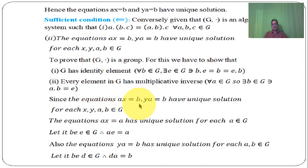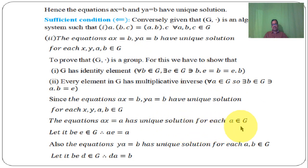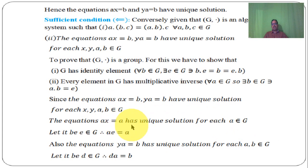Since the equations AX equal to B and YA equal to B have a unique solution for each X, Y, A, B belongs to G, consider the equation AX equal to A — here B is replaced by A. Since A, A belongs to G, for each A belongs to G, the equation AX equal to A has a unique solution. Let that solution be E belongs to G. Therefore A dot E equal to A.